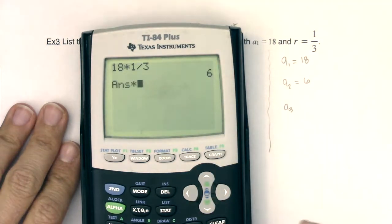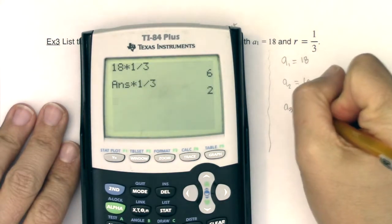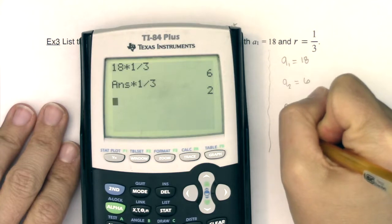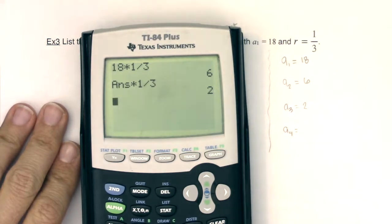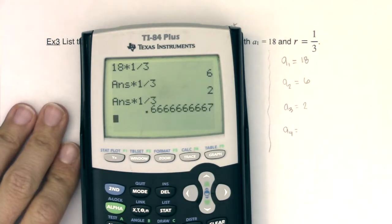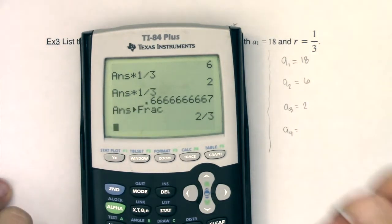And then a sub 3, take that number and multiply by 1/3 and I would get 2. Alright, and then a sub 4. Let's see, if I do 2 times 1/3, I get 0.667 as a fraction is 2/3.